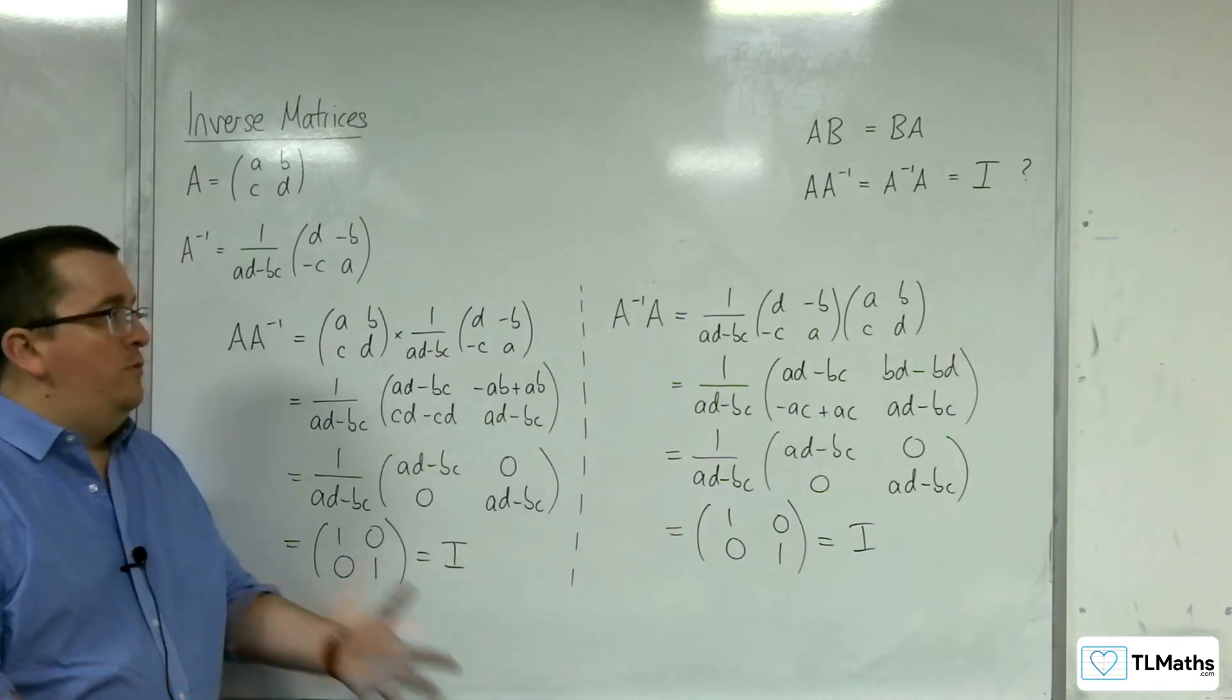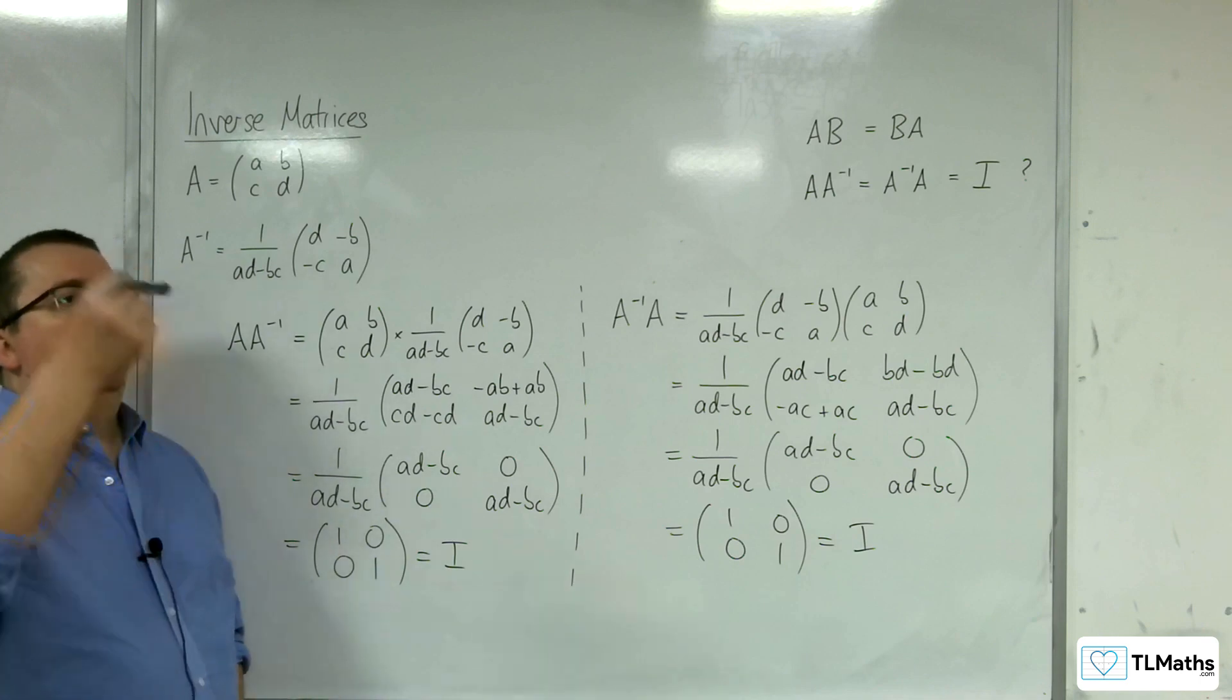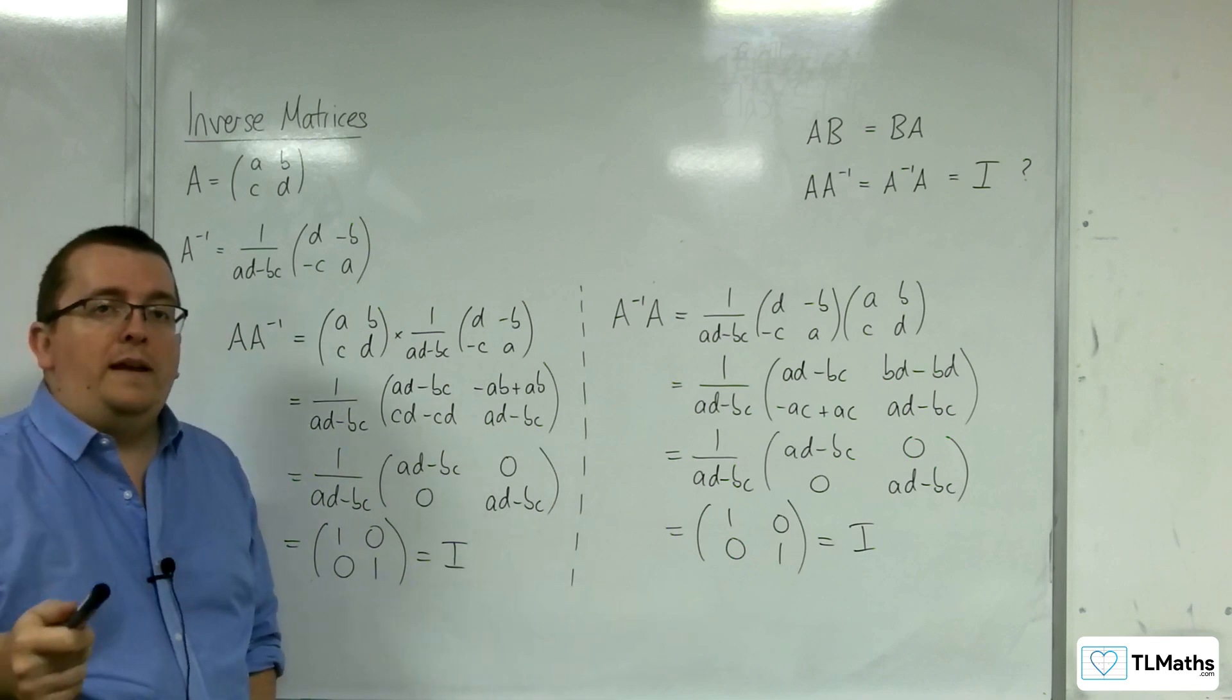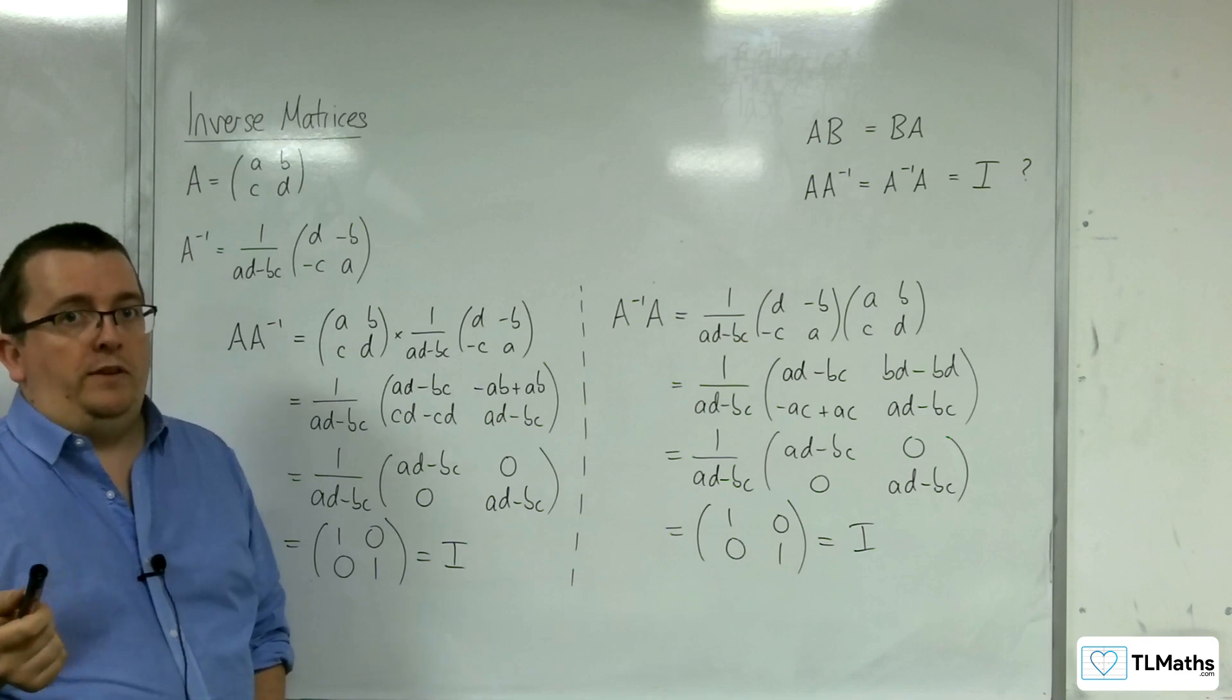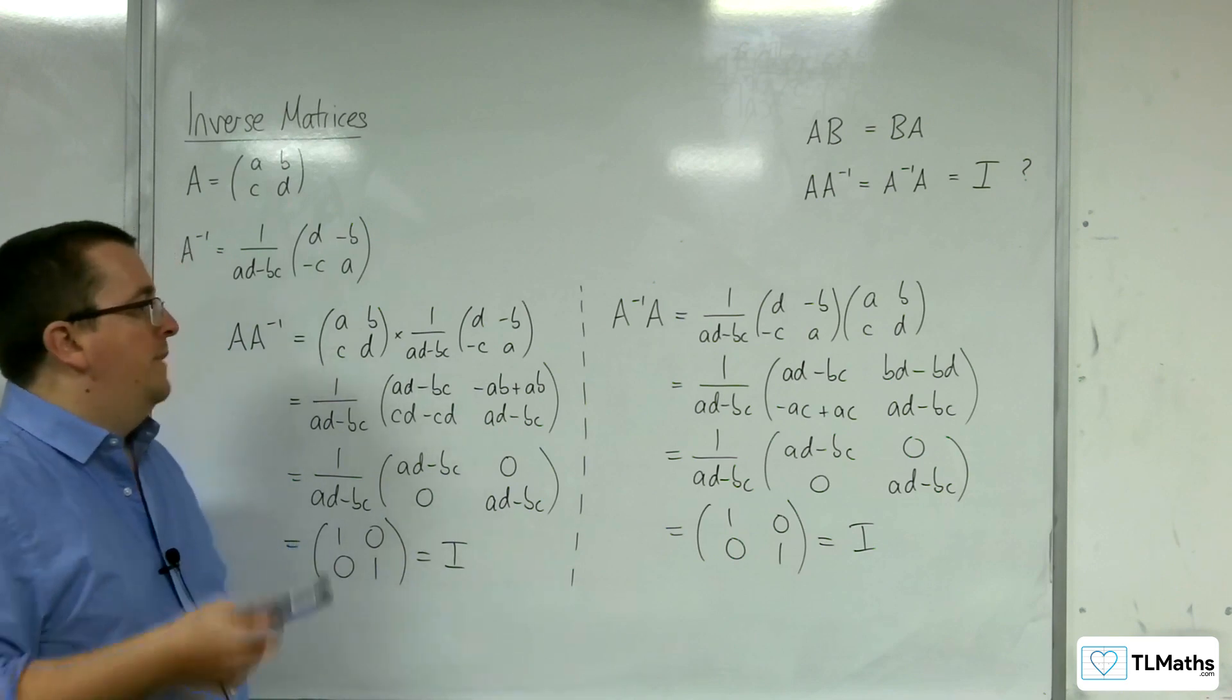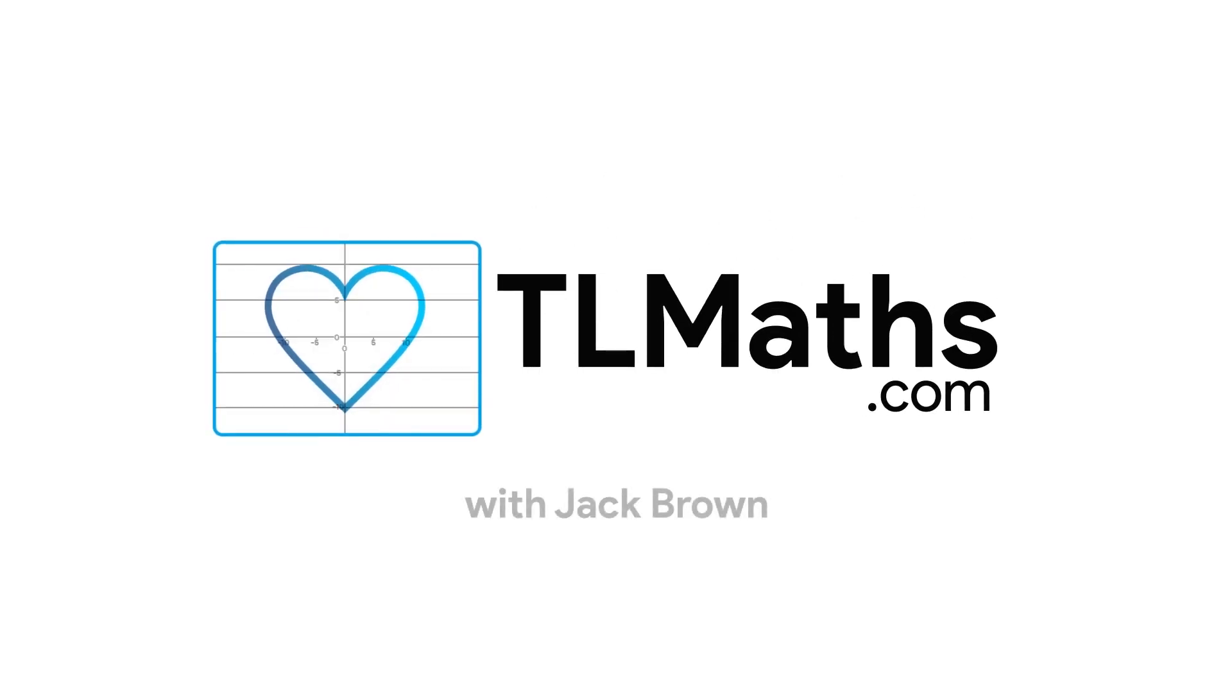So what I've shown then is multiplying a matrix by its inverse is commutative. It doesn't matter which way round you do it. The consequence of that is that the inverse matrix is always unique. So there are no two inverse matrices that will do the same job with different values in their entries. There is only one. There can be only one. And this shows that to be the case.